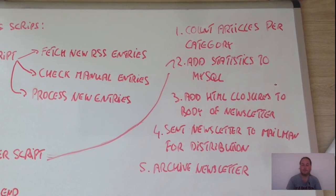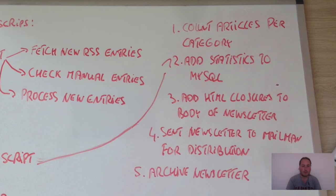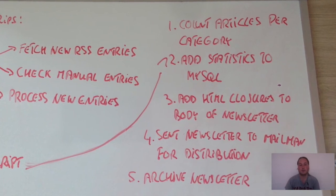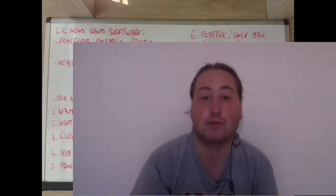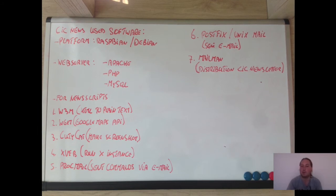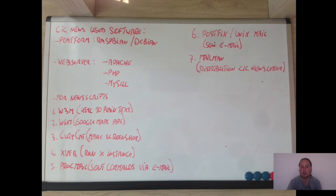Fourth, it sends the generated newsletter to Mailman for distribution. Last, it archives a copy of the generated newsletter so you always have an archive. Now here's an overview of the software for the complete news engine. At the moment I'm using a Raspberry Pi to run all the scripts.